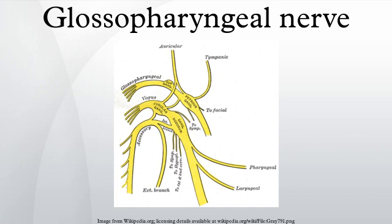Note: the glossopharyngeal nerve contributes in the formation of the pharyngeal plexus along with the vagus nerve. The glossopharyngeal nerve has five distinct general functions: branchial motor — supplies the stylopharyngeus muscle; visceral motor — provides parasympathetic innervation of the parotid gland via the otic ganglion; visceral sensory — carries visceral sensory information from the carotid sinus and carotid body; general sensory — provides general sensory information from the inner surface of the tympanic membrane, upper pharynx, and the posterior one-third of the tongue; visceral afferent — provides taste sensation from the posterior one-third of the tongue, including circumvallate papillae.